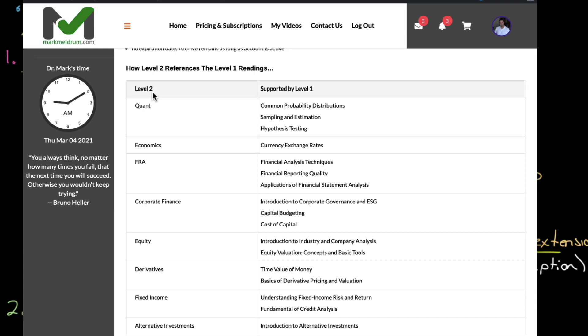So in this column here, we have Level 2 topic, quant, economics, FRA, and here are the readings at Level 1 that will support what you're going to do at Level 2. So from Level 1, common probability distribution, sampling and estimation, hypotheses testing. You're just expected to know that when you get to Level 2 because you'll be doing linear regression, multiple linear regression, and time series analysis. You'll be using different distributions to test for variances versus means. There's ANOVA tables, which are F-tests, which are F-distributions. You're really just expected to know all that stuff, especially hypotheses testing.